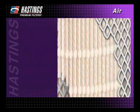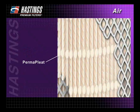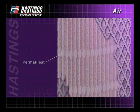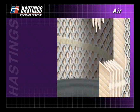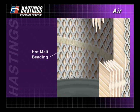Perma-pleat is a special embossing process which creates built-in pleat spacing in the media. This adds extra stability and separation to prevent incoming air from causing pleats to bunch together. In situations where larger filters require deep pleats or where there is high pulsation or direct side inlet flow, Hastings applies a special hot melt beading to lock the pleats in place and prevent bunching or excessive pleat movement.